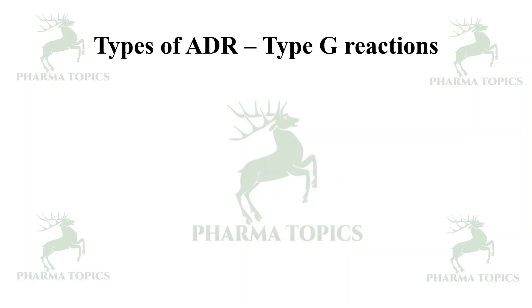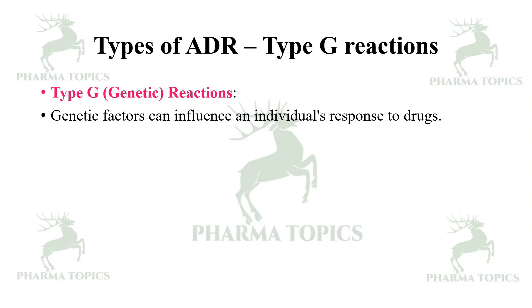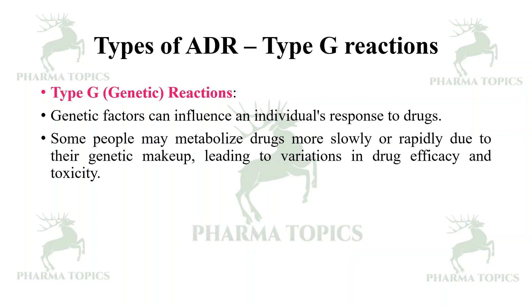Type G reactions are genetic reactions. Genetic factors can influence an individual's response to drugs. Some people may metabolize drugs more slowly or rapidly due to their genetic makeup, leading to variations in drug efficacy and toxicity. An example is fast metabolizers and slow metabolizers of isoniazid.